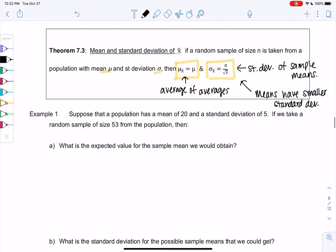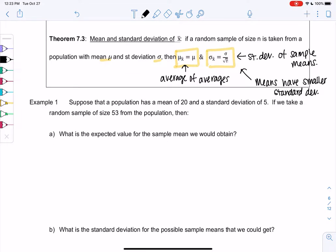So let's look at an example of how this works. Example 1. Suppose a population has a mean of 20, so mu is 20, and a standard deviation of 5, sigma is 5. If we take random samples of size 53, then what? So n is 53.